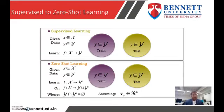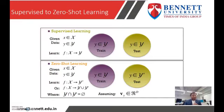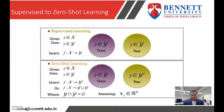What is the difference between supervised learning and zero-shot learning? In supervised learning, we train data of a class and test data of the same class. But in the case of zero-shot learning, labelled training examples are not available, so we have to predict about the unseen class. This is the basic difference between zero-shot learning and supervised learning.